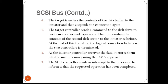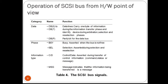In the 7th step, the target controller sends a command to the disk drive to perform another seek operation, and then it transfers the contents of the second disk sector to the initiator as before. At the end of this transfer, the logical connection between the two controllers is terminated. As the initiator controller receives the data, it stores them into the main memory using the DMA approach. Finally, the SCSI controller sends an interrupt to the processor to inform it that the requested operation has been completed.